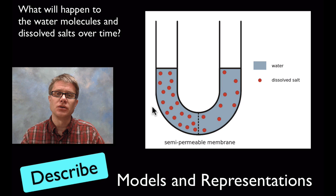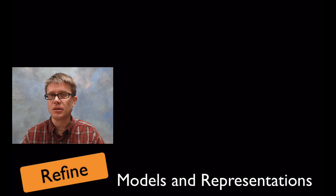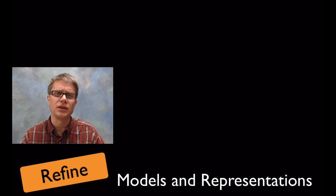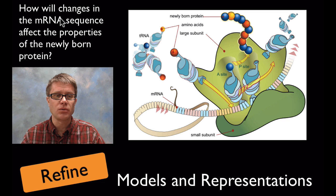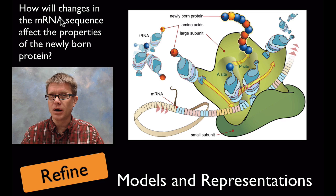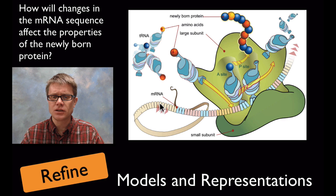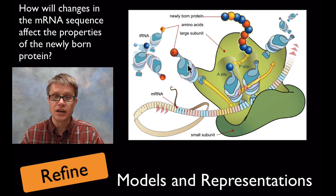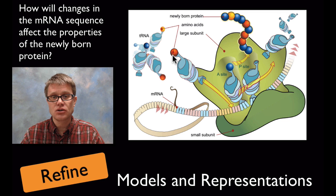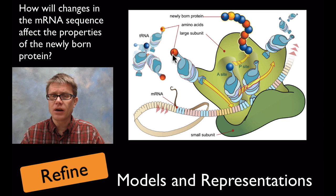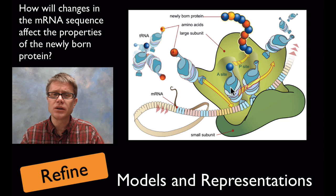The third thing they want you to be able to do in this science practice is to refine a model or a representation. So they could give you a model and then they could ask you questions based on that. So I've got a model over here to the right and what I'm asking is how will changes in the messenger RNA sequence affect the properties of the newly born protein? Now I'm asking you to refine the model that I've given you. And so right here you can see that we've got translation going on. So we have messenger RNA. It's moving through a ribosome. And as it does we've got our tRNA. So the tRNA, which is going to be this molecule right here, is going to arrive at the A site and it's going to contribute its one amino acid. And so that would be just describing this model.